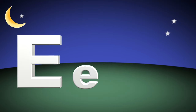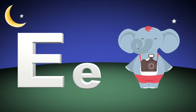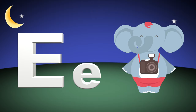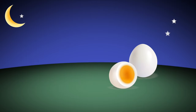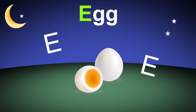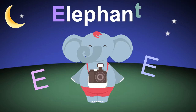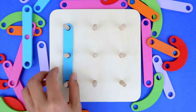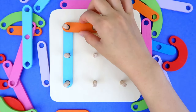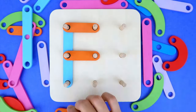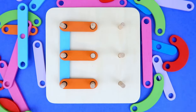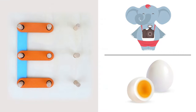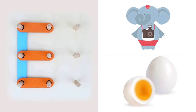E is for elephant. E is for egg. e, egg, e, elephant. Letter E: elephant, egg.